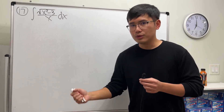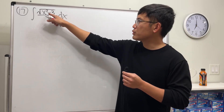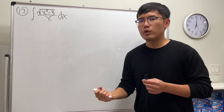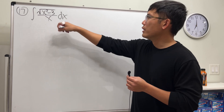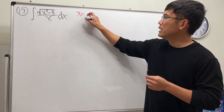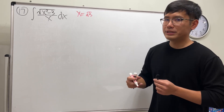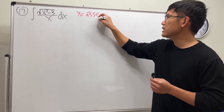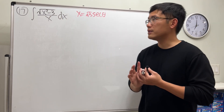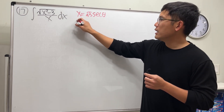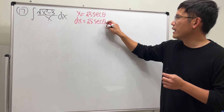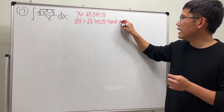Here we go — trig substitution. This is a subtraction between x squared and something: three is the same as square root of three squared. The first step is x equals square root of three and we use secant. With secant theta, when we have a subtraction and x goes first, we put secant, and dx will be square root of three times secant theta times tangent theta d-theta.